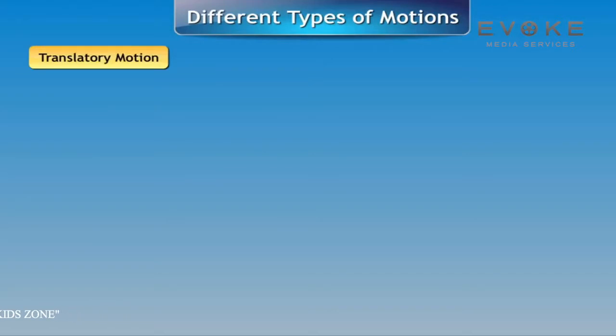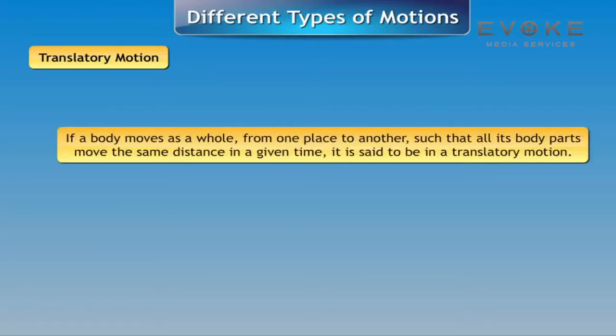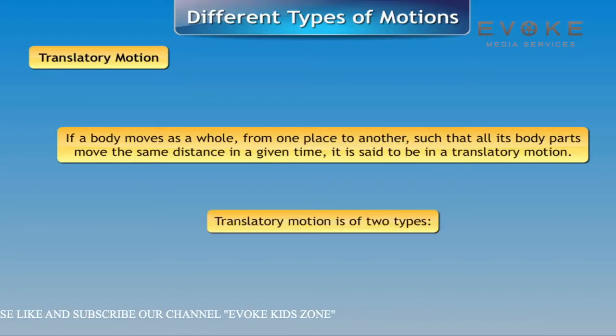Different types of motions: Translatory motion - If a body moves as a whole from one place to another such that all its body parts move the same distance in a given time, it is said to be in translatory motion.